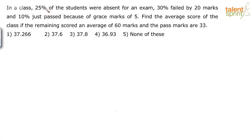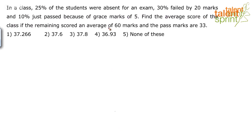In a class, 25% of the students were absent for an exam. 30% failed by 20 marks and 10% just passed because of grace marks of 5. Find the average score of the class if the remaining scored an average of 60 marks and the pass marks are 33.